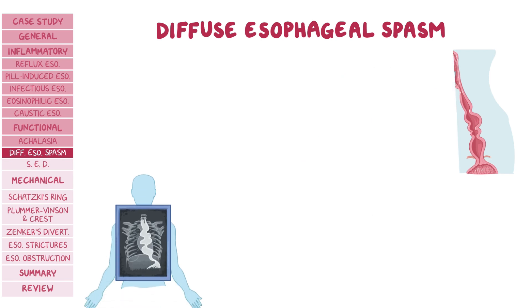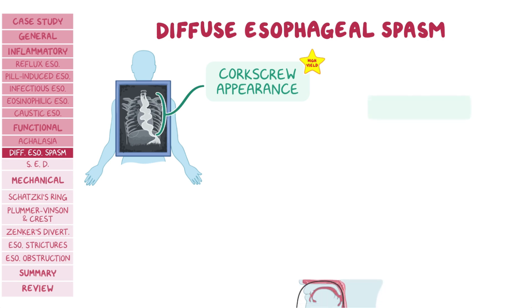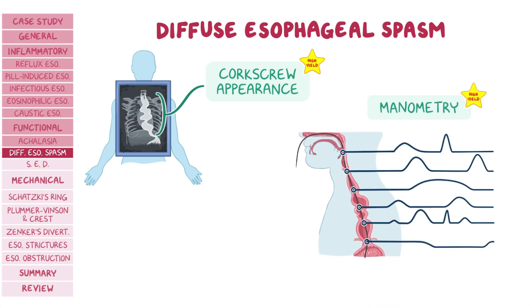If performed at the time of symptoms, barium swallow will show a corkscrew or rosary bead appearance of the esophagus, but this is not specific to diffuse esophageal spasm. The gold standard for diagnosis is manometry, which shows uncoordinated high-amplitude peristaltic contractions throughout the esophagus. First-line medications in the treatment of diffuse esophageal spasm include nitrates and calcium channel blockers.